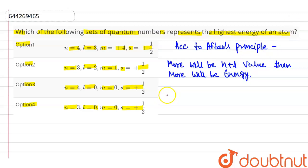Now firstly we are talking about option number first. Here the value of n is 4 and the value of l is 3, so energy is equal to 7. Option second, in which the value of n is 3 and the value of l is 2, so the energy is equal to 5.